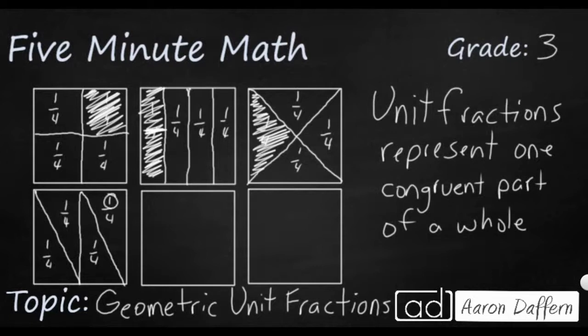Remember, my unit fraction always has a numerator of one. That's the top number. It represents just one piece. Always has a numerator of one. So this particular long right triangle is going to be the same as all of these other shaded pieces.